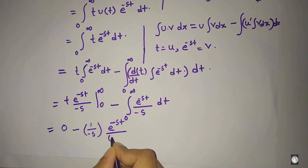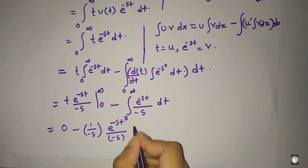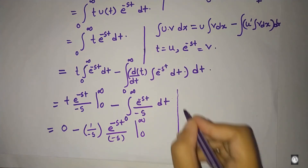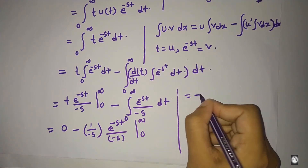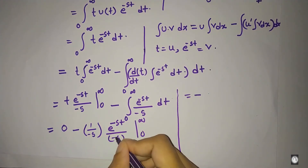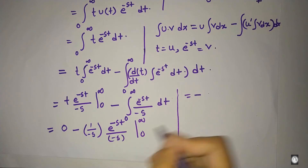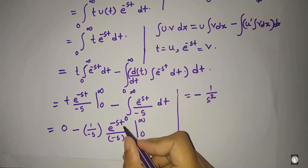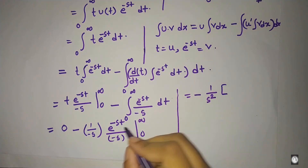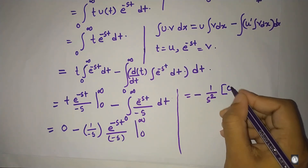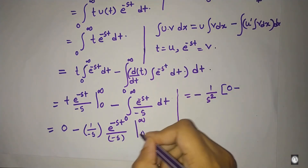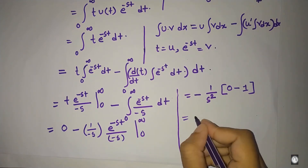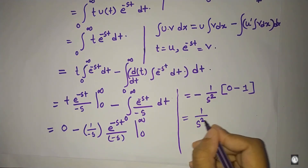Minus the remaining integration: 1 divided by (-s), and the integral of e^(-st) dt gives e^(-st) / (-s), with limits 0 to infinity. There is a minus sign outside, giving 1/s times 1/s = 1/s². Substituting the limits: at infinity e^(-∞) = 0, and at 0 e^(0) = 1, so we get minus(0 - 1) = 1. Therefore the result is 1/s².